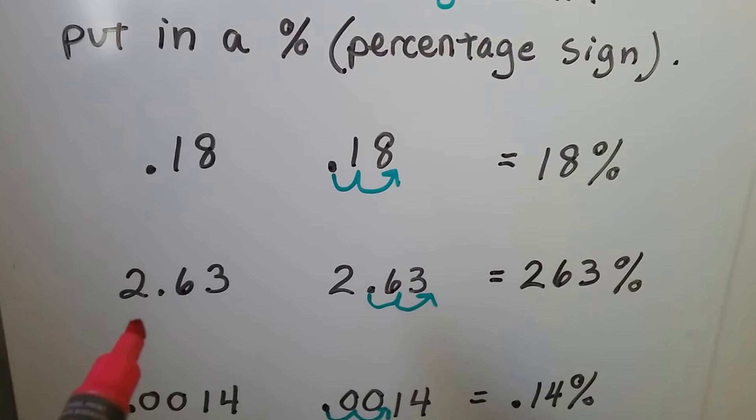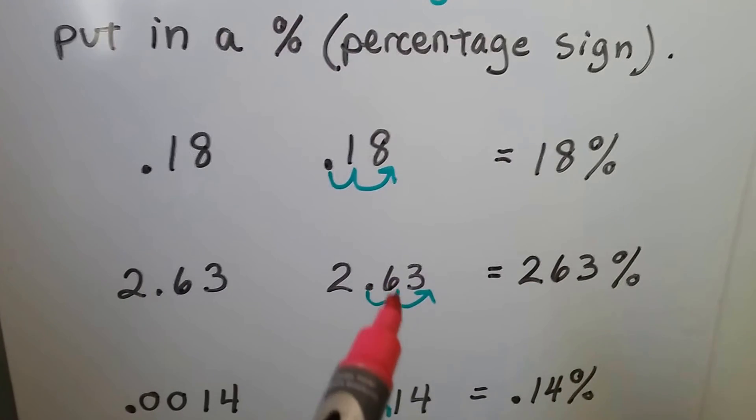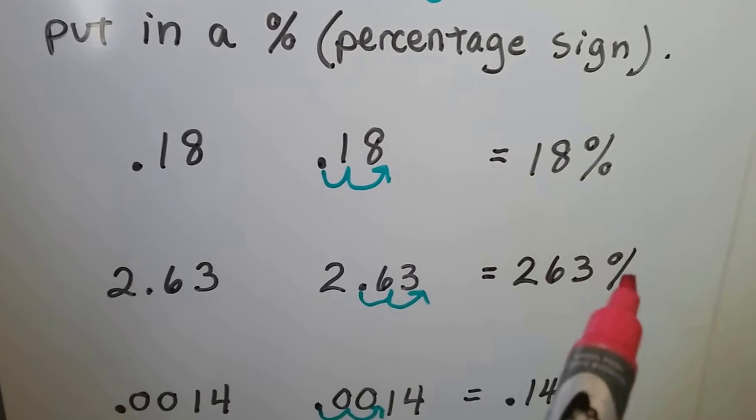If we have 2 and 63 hundredths, 2.63, we move that decimal place one, two places over. We don't need to write it. We just put 2, 6, 3 and a percentage sign.